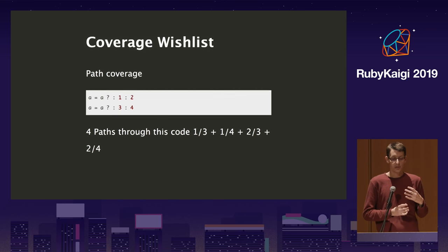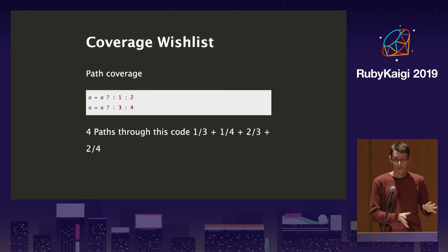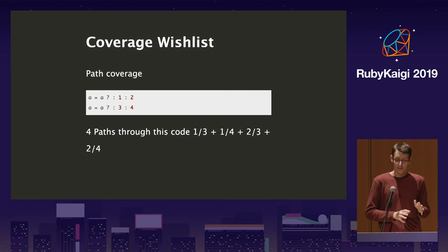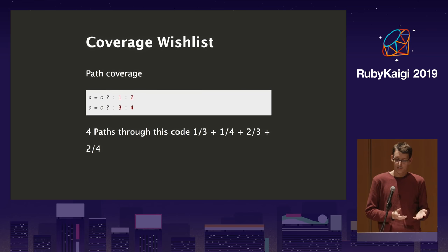The ultimate feature for code coverage is path coverage — tracking all the combinations of paths you can take through your code. For a small piece of code with two conditions, you'd have four paths. It seems like overkill for most projects, but for something like Devise or an authentication library where a user without a password tries to log in with a blank password, path coverage is super useful. It ensures every possible combination was tested at least once, catching big blind spots that many libraries have.